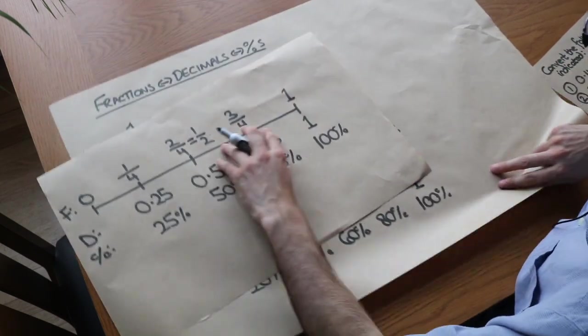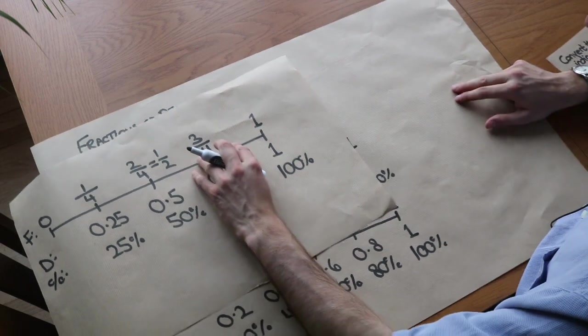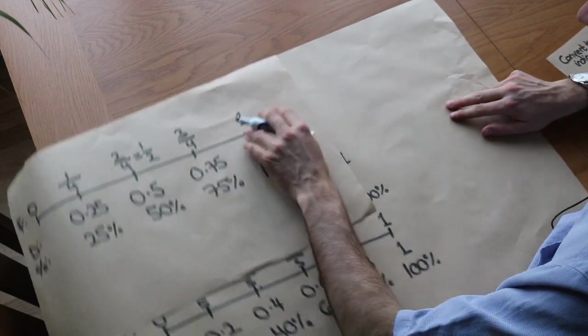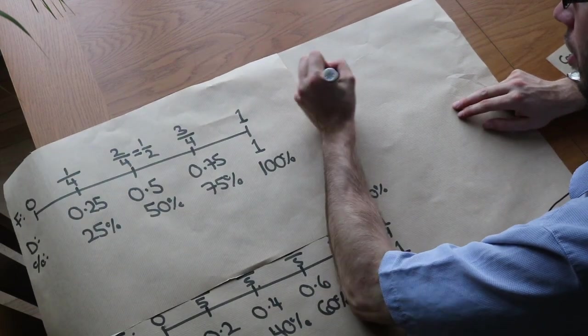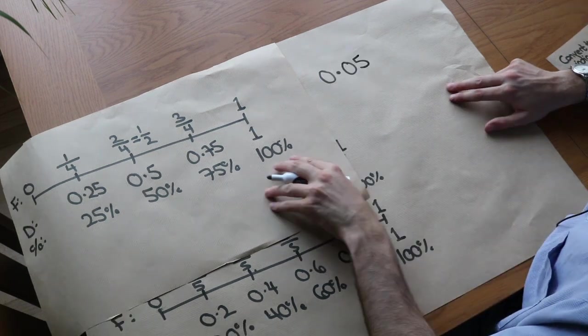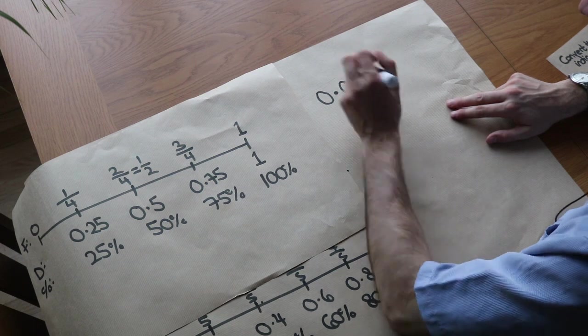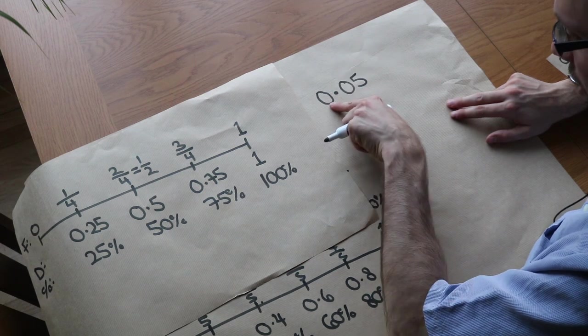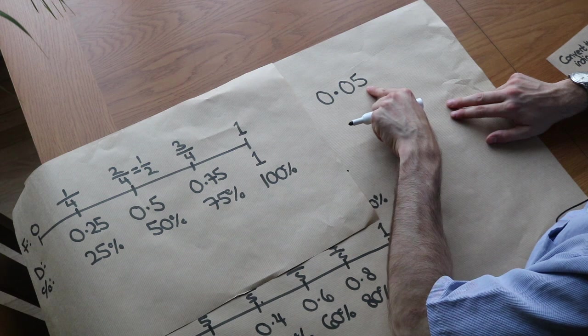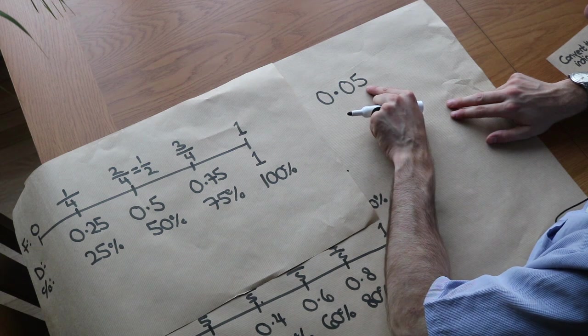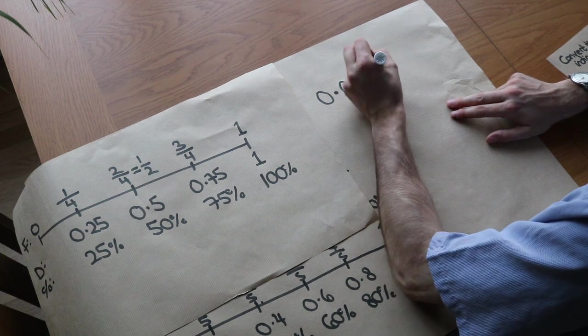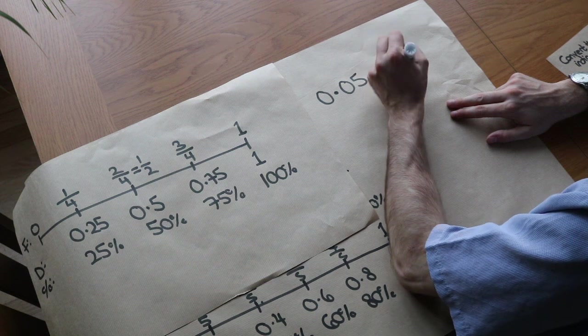But we can also convert any arbitrary decimal to a fraction. So let's just say, for example, we had 0.05. Now, all we need to do is to think about the place value of these digits. Now, this is the hundredths digit, because that's a units digit, that's a tenths digit, that's a hundredths digit. And how many of those hundredths do we have? Well, we've got five of them. So we have five hundredths.